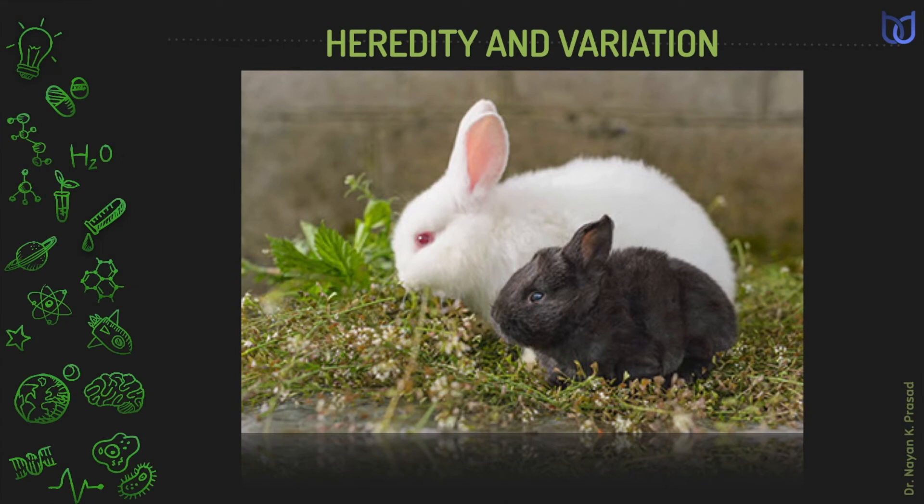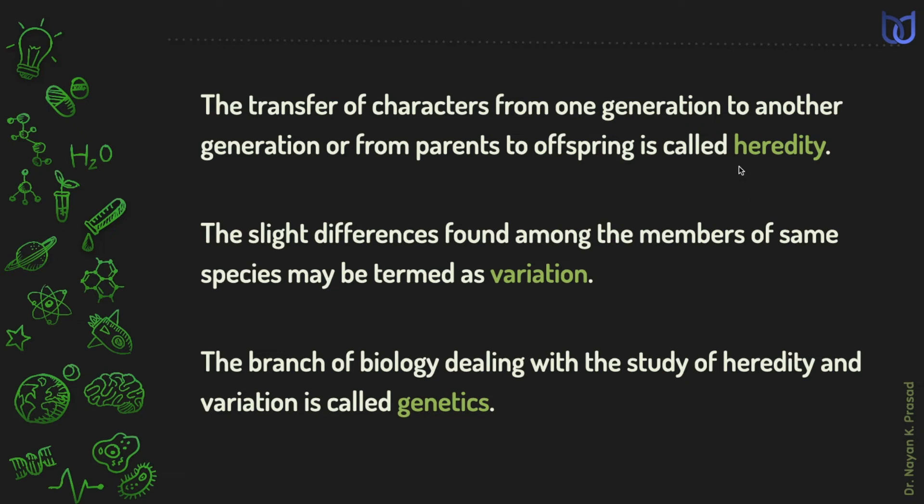All living organisms possess the most characteristic feature of reproduction, during which they produce offspring of their own kinds. However, during this process, some characters are transferred as such while some others are transferred with differences. The transfer of characters from one generation to another generation or from parents to offspring is called heredity. The slight differences found among the members of same species may be termed as variation.